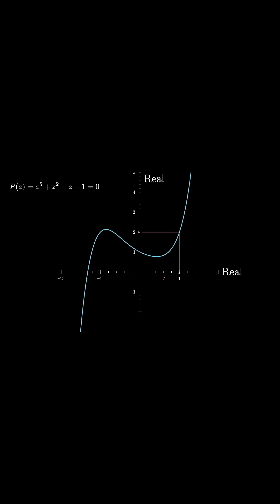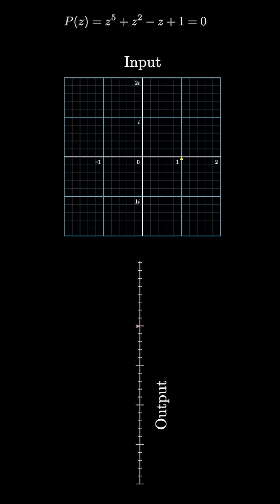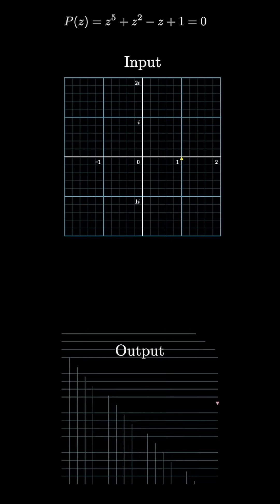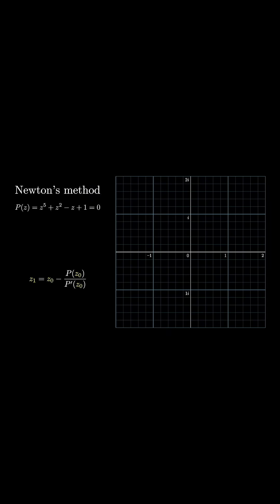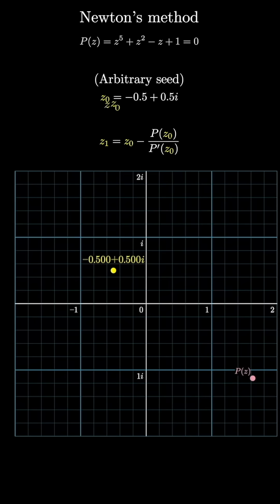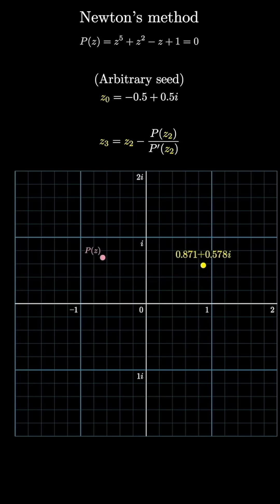For our purposes, instead of considering a function with real number inputs and real number outputs like we're used to, consider all of the complex number inputs and the corresponding complex number outputs. Now we can't visualize Newton's method with tangent lines and intersecting the x-axis anymore, but the formula still works. It's still a valid rule that tells you how you can adjust one guess to push it closer to a true solution of the equation. Maybe that feels a bit bizarre — I realize not everyone loves complex numbers the way I do — but here's the cool part.